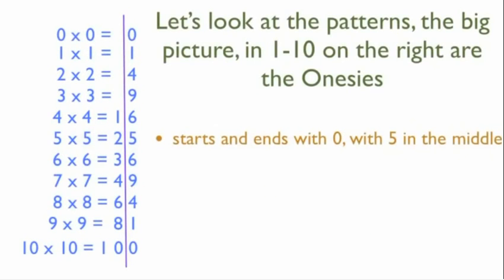Here I have illustrated everything from 0 to 10 — the squares of each. It is: 0×0=0, 1×1=1, 2×2=4, 3×3=9, 4×4=16, 5×5=25, 6×6=36, 7×7=49, 8×8=64, 9×9=81, 10×10=100.